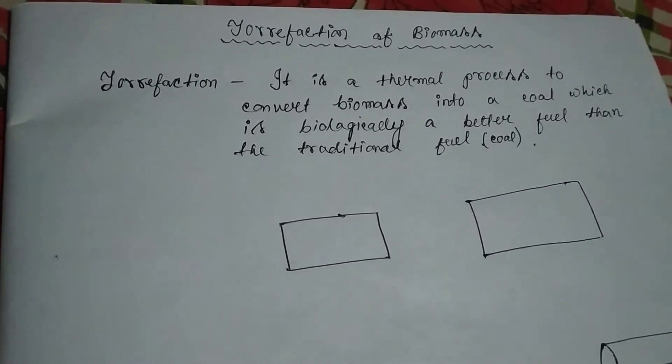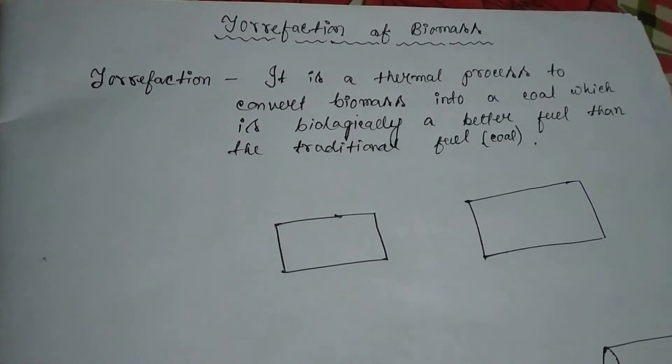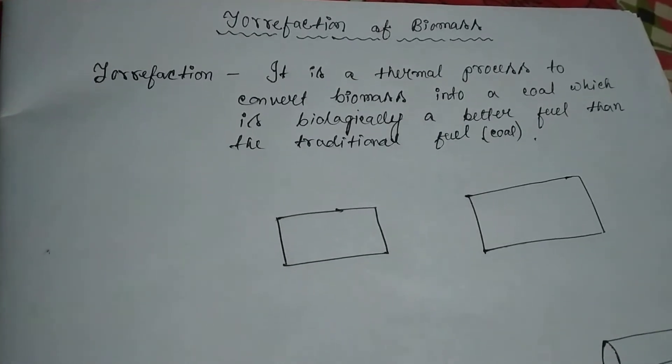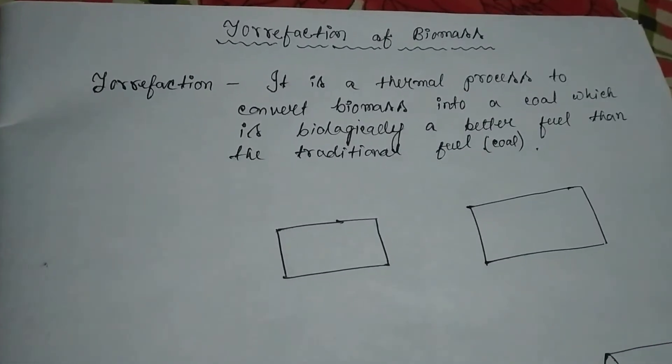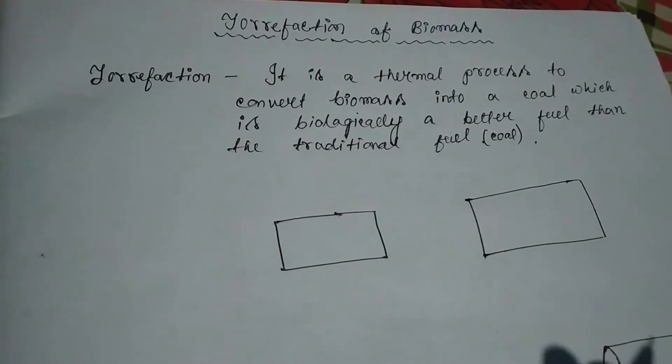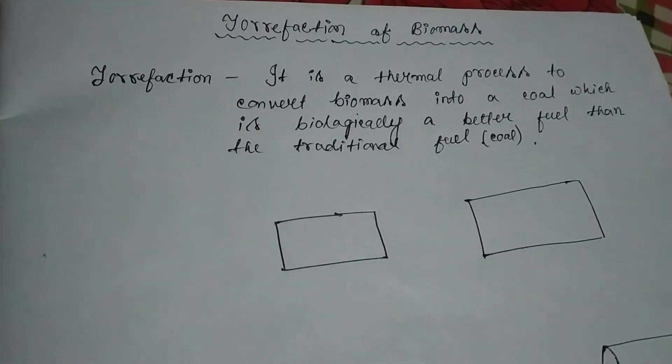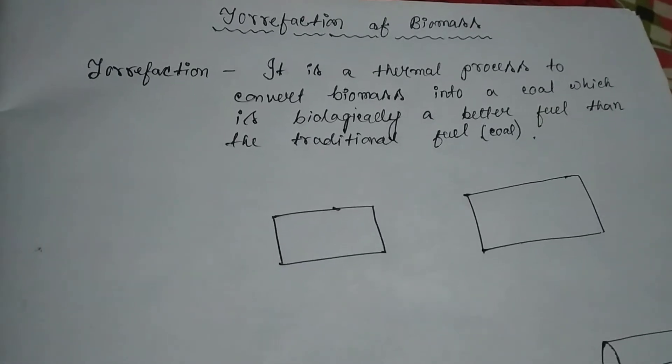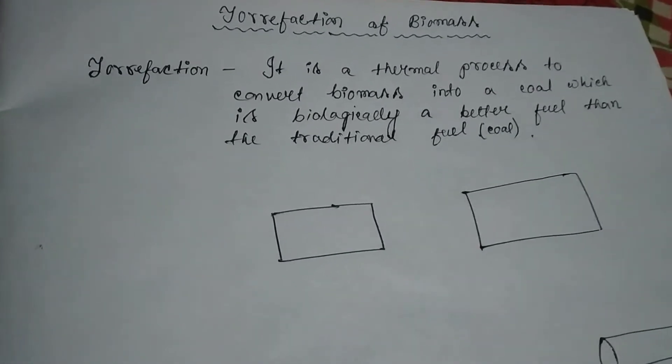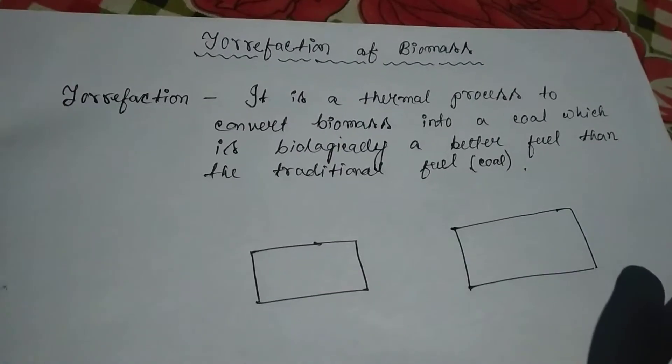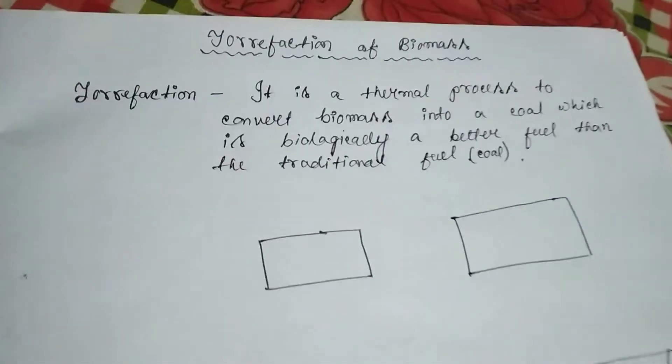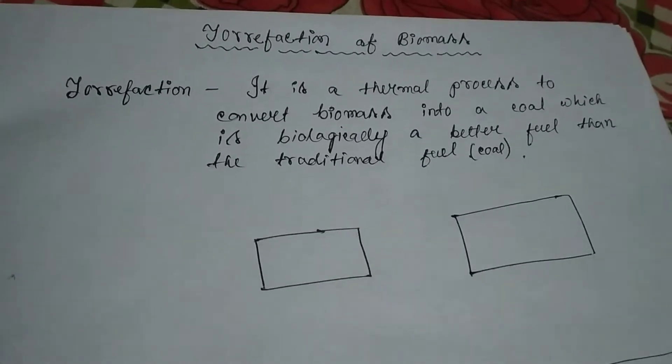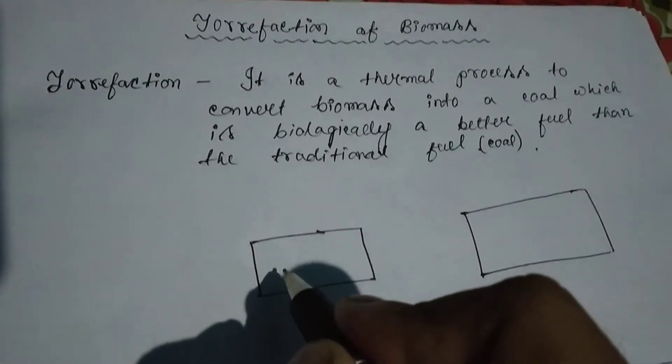There is a process in which those biomasses like rice straws and sugarcane particles can be used to produce a cleaner fuel which is about 90 percent less carbon dioxide emitting. Let me give a brief overview of how this process can be achieved through torrefaction of the biomass.